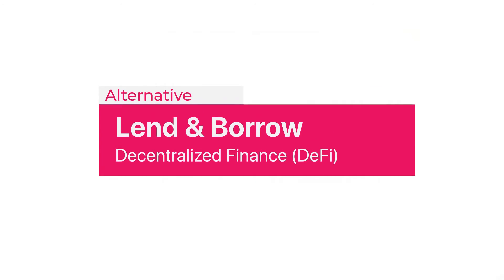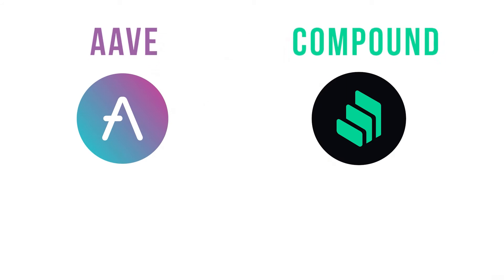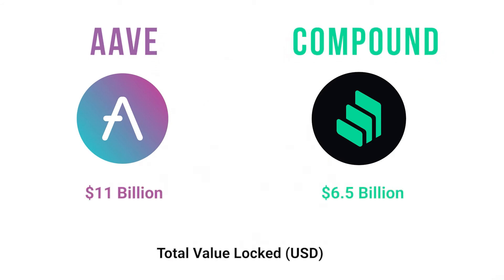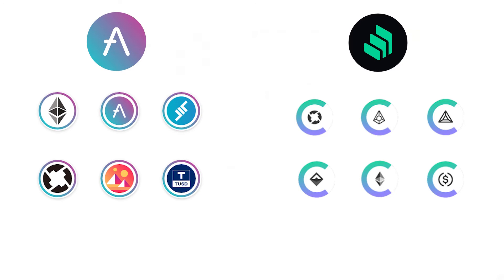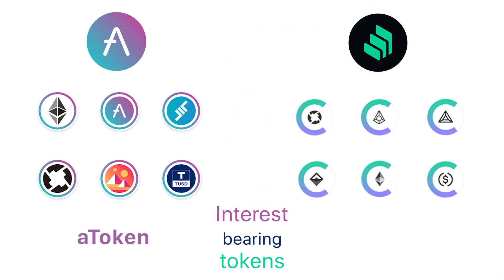Now let's look at how DeFi protocols facilitate these services without any intermediaries. In this video, I'll be using Aave and Compound for reference implementations — these are currently the two most popular protocols for DeFi lending. In the CeFi system, each user has an account that the bank uses to keep track of users' deposits and accumulating interest. DeFi protocols take a slightly different approach: they issue specialized tokens that serve as a proxy for users' deposits and accumulating interest. Aave uses A tokens and Compound uses C tokens.